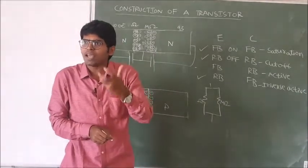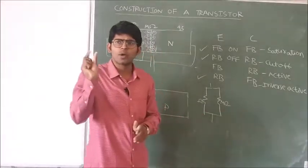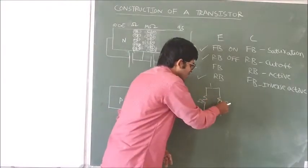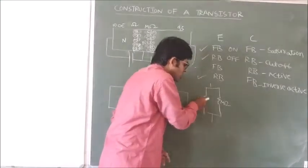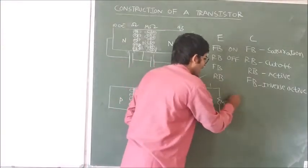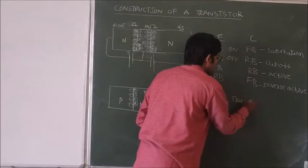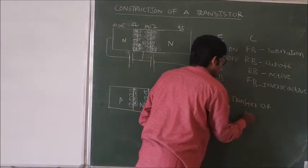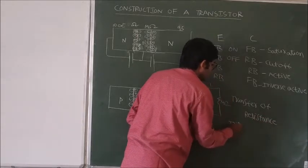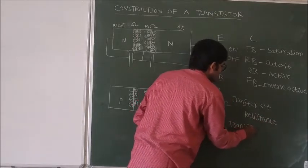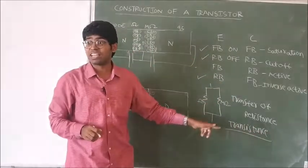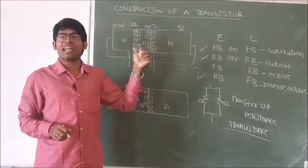They wanted to explain this phenomenon and concluded that it is possible only when the resistance is being transferred from the low-resistance side to the high-resistance side. They called that property the transfer of resistance, which they termed transistance. The device exhibiting this property is called a transistor.